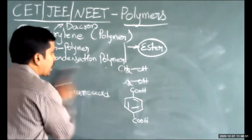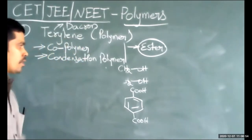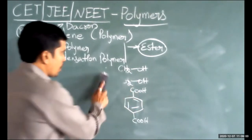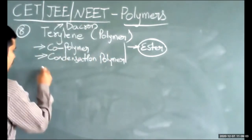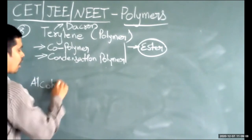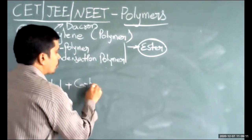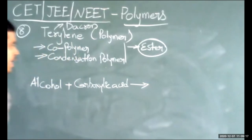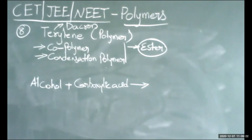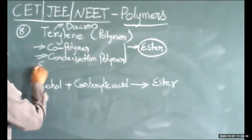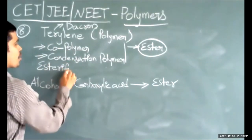Esters are formed by the reaction of alcohols with carboxylic acids. An alcohol functional group is present in ethylene glycol, and a carboxylic acid functional group is present in terephthalic acid.